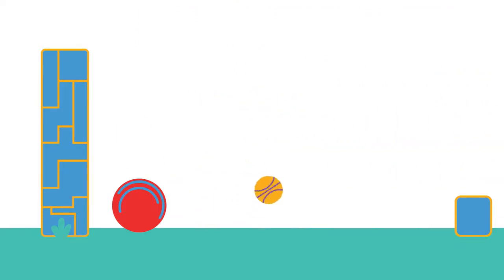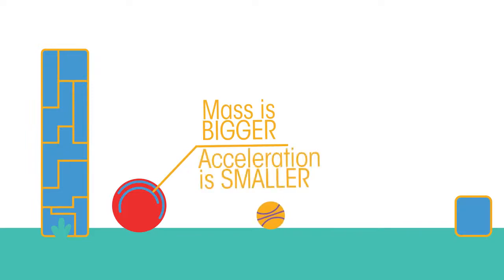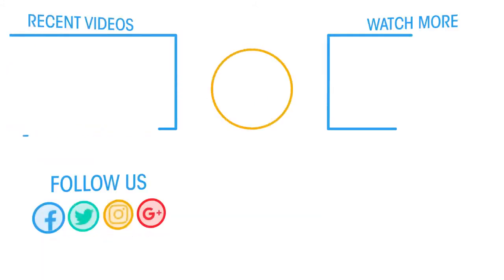So why do you think you can throw a tennis ball much faster than a shot put? Because the force from your arm is the same, but the mass of the shot is much bigger, so its acceleration will be smaller.